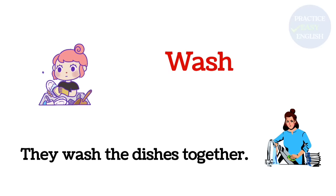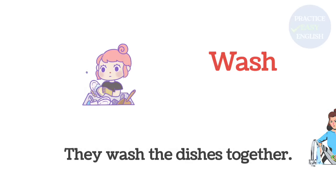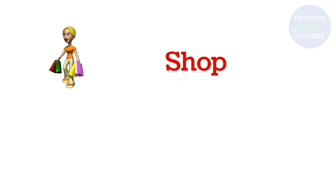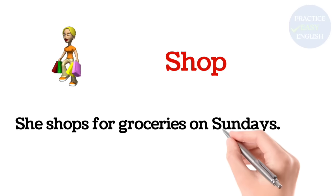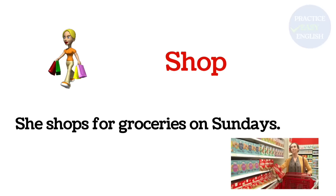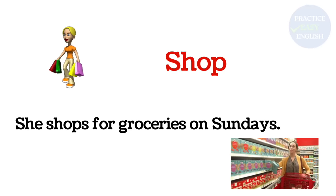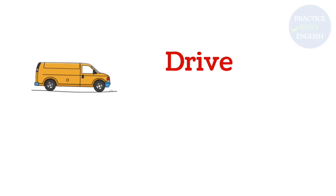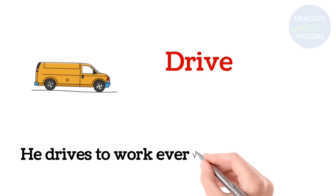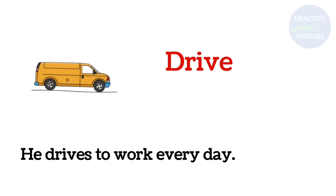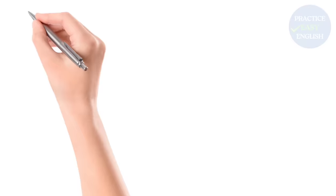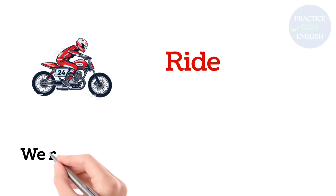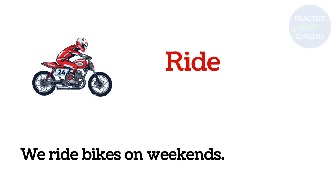Wash. They wash the dishes together. Shop. She shops for groceries on Sundays. Drive. He drives to work every day. Ride. We ride bikes on weekends.